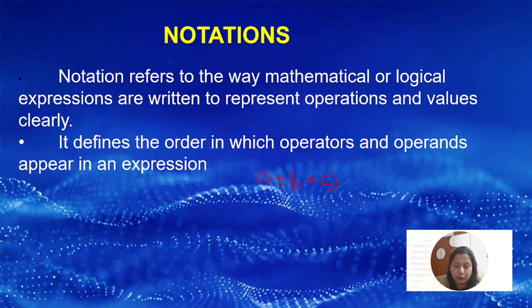The normal mathematical expression follows the BODMAS rule. The way you are writing the mathematical or logical expression — how we are going to represent operations and values clearly — so that you will know which operation you have to do first and what the value is. It defines the order in which operators and operands appear in an expression.